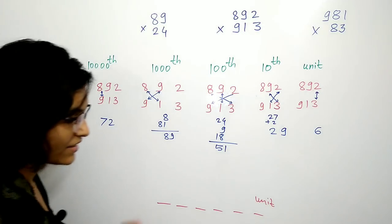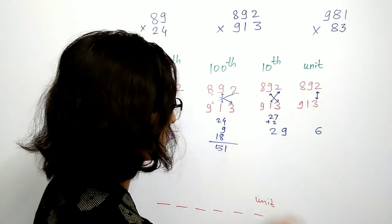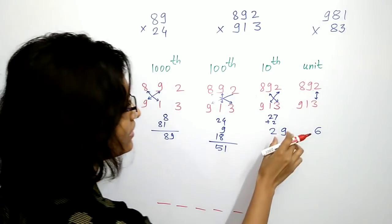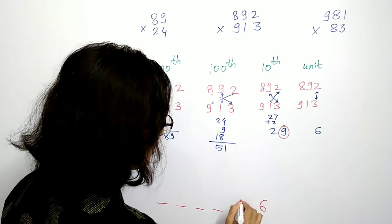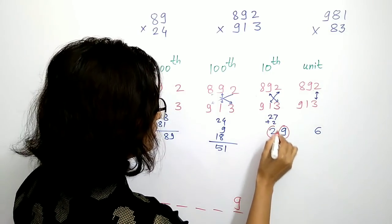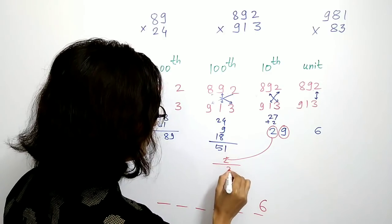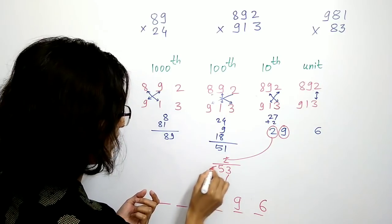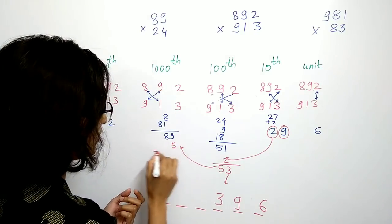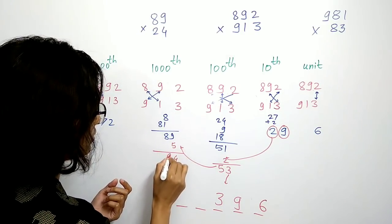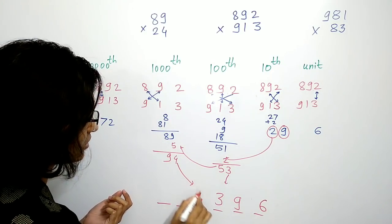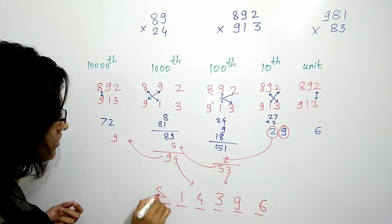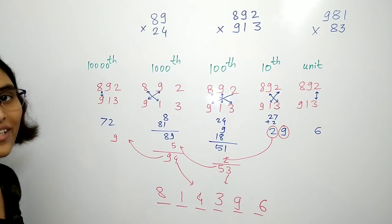Now the final step: take the 6 at the unit place. Take the 9, carry 2, add it — which gives 53. Take the 3, add the 5 — which gives 94. Take the 4, add the 9 — so the result is 8, 1, 4, 3, 9, 6, which is 814,396.